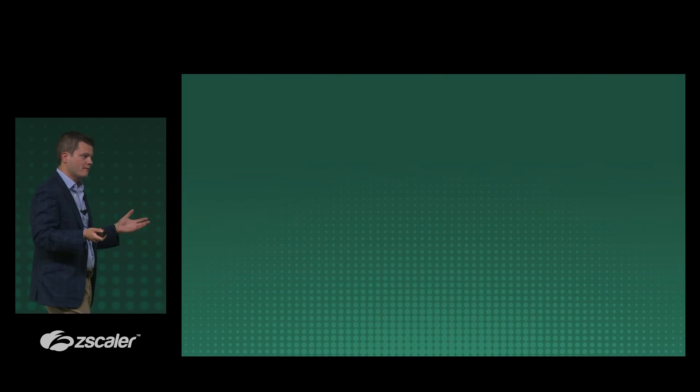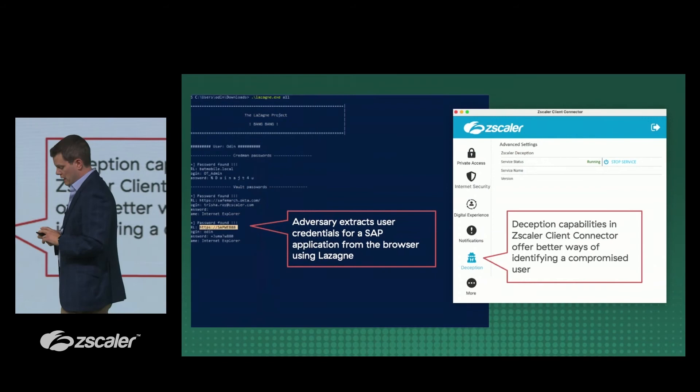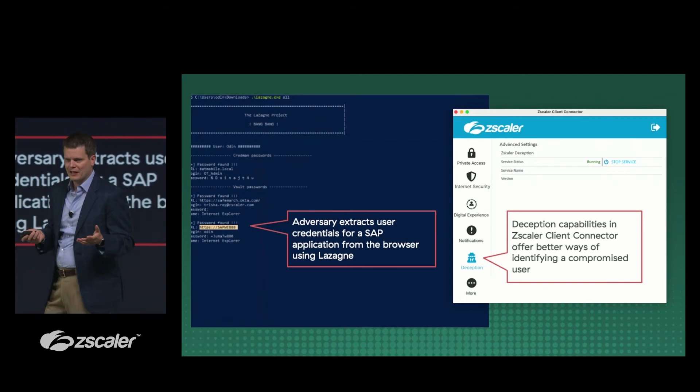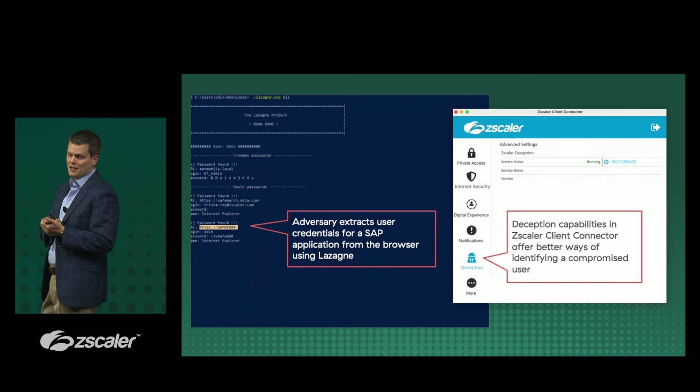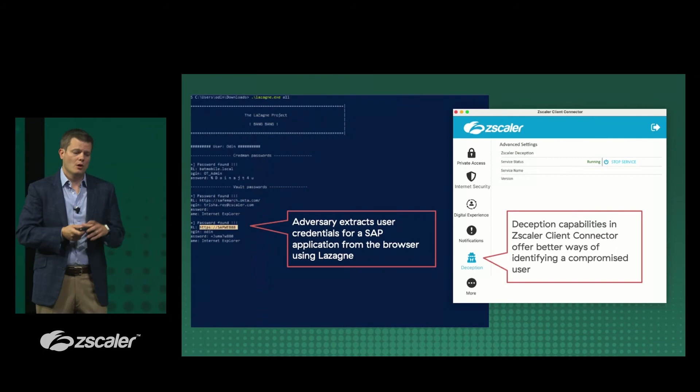Application deception has now been fully integrated across the Zscaler platform. Protecting against vulnerable applications is noisy — moving laterally that way will set off alarms. Attackers may instead choose to live off the land and use what they already have access to. Deception is being integrated directly into Client Connector so there is no separate agent — just one agent.